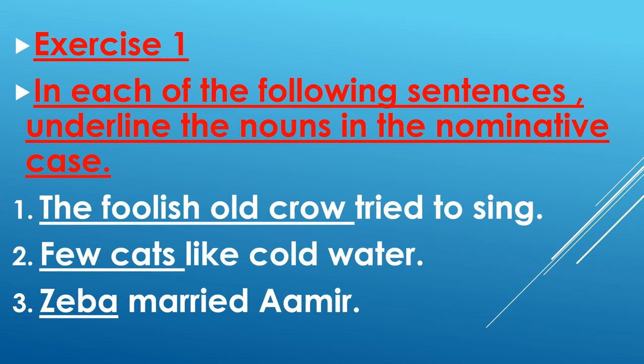The first sentence is: the foolish old crow tried to sing. What is the subject? The foolish old crow. So it is in nominative case, so underline the foolish old crow.